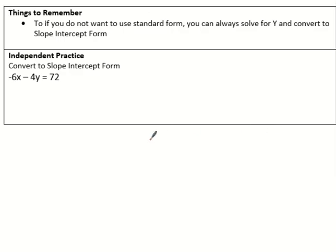Okay. So the main thing to remember is that if you do not want to use standard form, you can always solve for Y and convert it to slope-intercept form. And honestly, that could be vice versa. You can change slope-intercept form to become standard form. So your independent practice is just to convert this standard form equation into slope-intercept form. Remember, slope-intercept form, Y equals MX plus B. All right. Until next time.